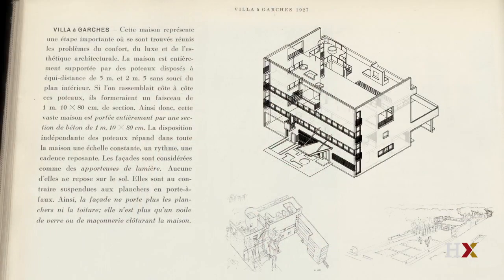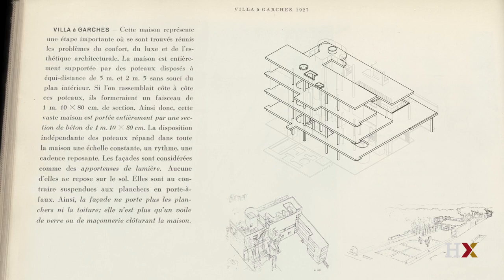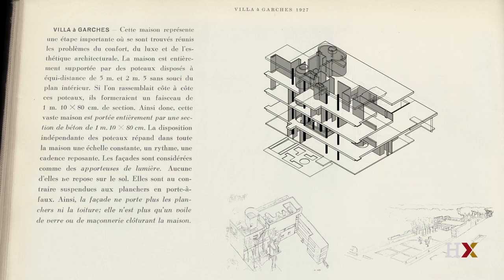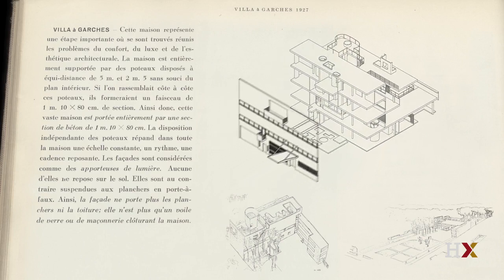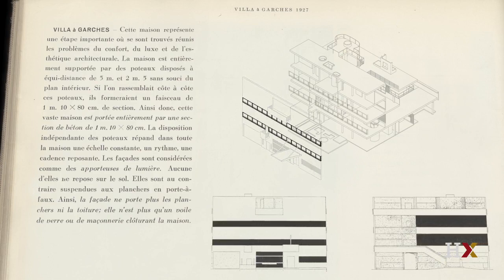The Villa Stein de Moncy, usually called simply by its location Garches, is a very different kind of translation of the Domino system into a suburban house. Here we can see all the features of Domino: the column grid and its supporting horizontal slabs, its relationship to the earth, the separation of the structural columns from the interior walls that allows a free arrangement of the plan. The implication now fulfilled of a non-load-bearing wall in front of the slab on the long side, indexed by windows that go across the entire width of the facade — what Le Corbusier would call ribbon windows or elongated windows.